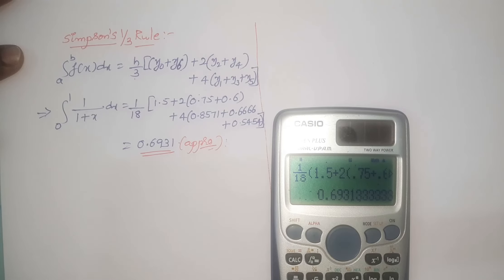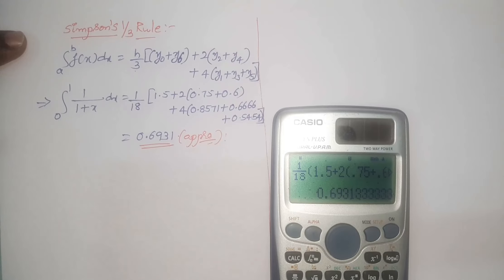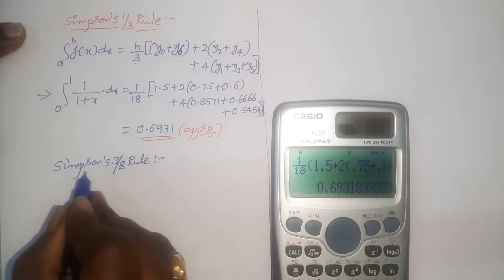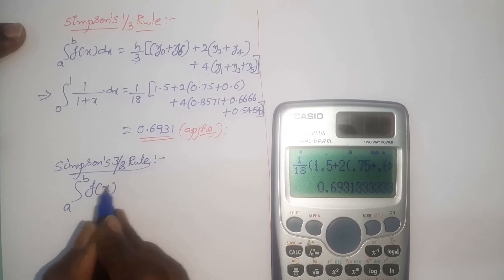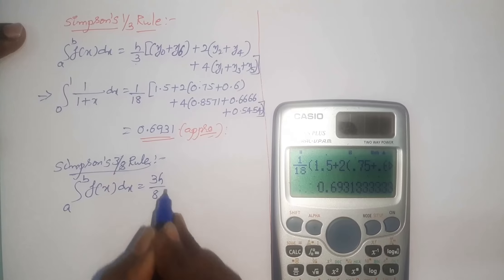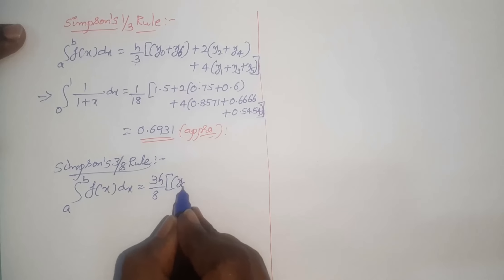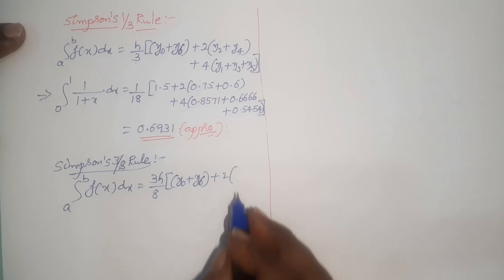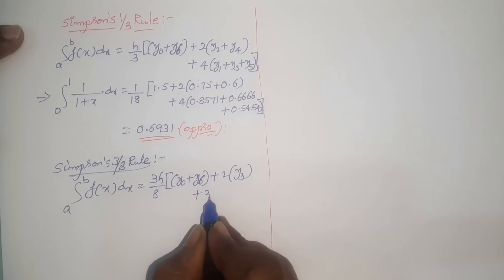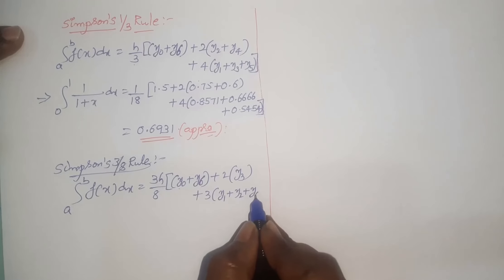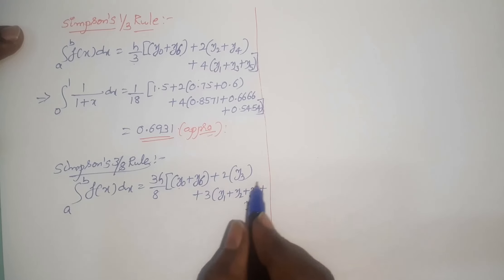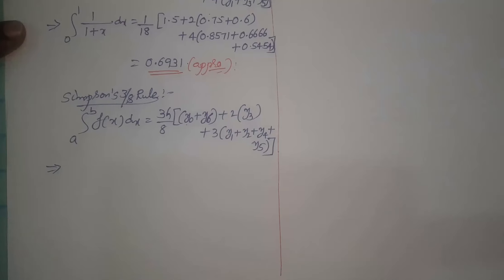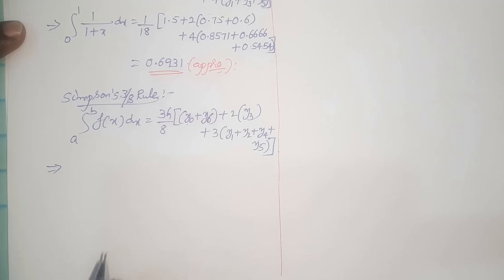Now we find the definite integral using Simpson's three-eighth rule. According to this rule, the integral from a to b of f(x) dx equals 3h by 8, multiplied by the sum of first and last ordinates y0 plus y6, plus 2 into the sum of multiples-of-3 ordinates (only y3), plus 3 into remaining all terms y1 plus y2 plus y4 plus y5. Replace all values accordingly.